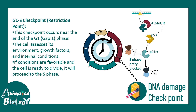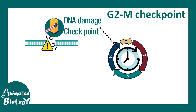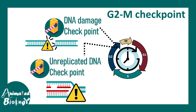Next, the G2/M checkpoint operates at the G2/M transition point. It looks for DNA damage and also for unreplicated DNA — if replication didn't happen properly in S phase and there is unreplicated DNA, this checkpoint can sense it. Even post-replication DNA breaks or mutations that occurred during the replication phase can also be sensed using this checkpoint.